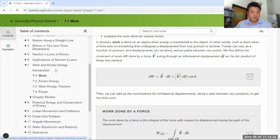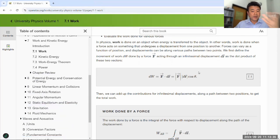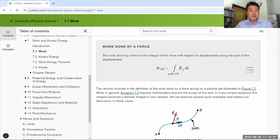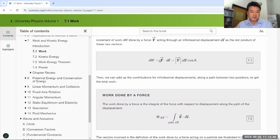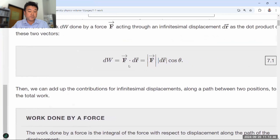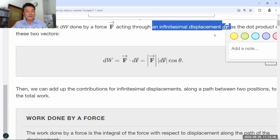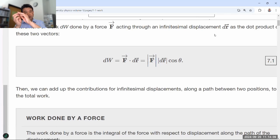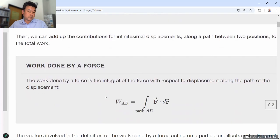So section 7.1 defines work, and the work is defined, so this is the calculus way of saying it. In an algebra based physics class, you would have seen this as force dot product with a delta x or delta r. And that would have been however much work was done over that segment of displacement. We are in a calculus-based physics class, so that finite segment becomes an infinitesimal displacement, and in order to calculate work done over a non-infinitesimal finite path that could be curved, we use integral.